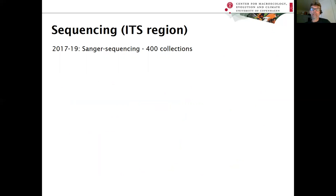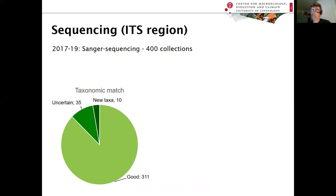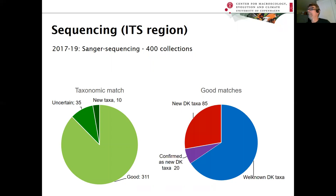Very recently we started sequencing quite a lot of our collections, starting four years ago with Sanger sequencing. So far we have run around 400 collections on that platform, providing relatively interesting results: more than 300 had a very good match, some were uncertain, and we could identify around 10 new species designs. For those with a good match, most represent well-known Danish taxa, but more than 100 new species could be confirmed as new Danish species based on this sequencing approach.